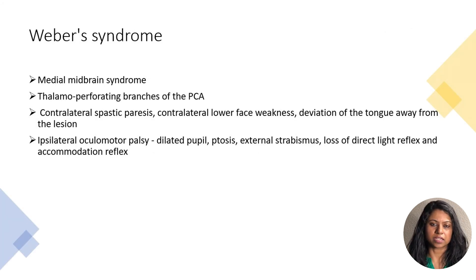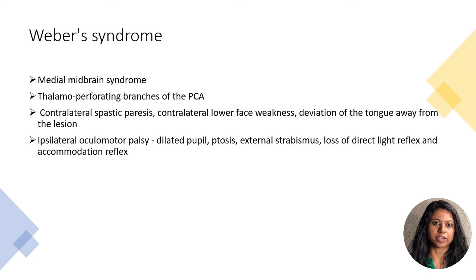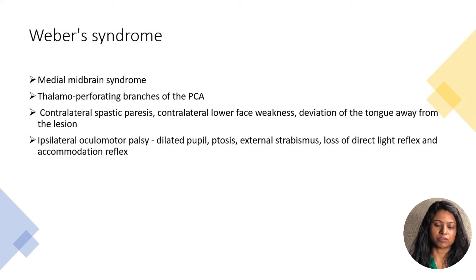Two important syndromes are Weber syndrome and pontocerebellar angle syndrome. Weber syndrome is also called medial midbrain syndrome. It is due to involvement of the thalamoperforating branches of the posterior cerebral artery. It presents with contralateral hemiplegia and ipsilateral third or oculomotor nerve palsy signs, such as ptosis, dilated pupils, diplopia, external strabismus, loss of direct light reflex, and loss of accommodation reflex.